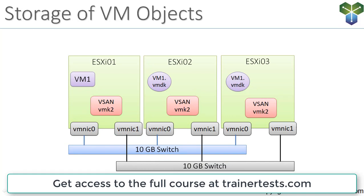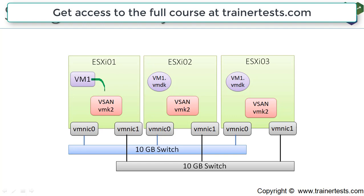So how are virtual machine objects actually stored, and how do these VM kernel ports come into the picture? Here we see VM1, one of my virtual machines stored on vSAN. As VM1 has reads or writes that need to be executed, they are going to be pushed over the physical network using this vSAN VM kernel port to the appropriate destination host. Here we can see the active VMDK for this particular virtual machine, and there's also going to be another copy of the VMDK — a mirror copy — just in case the primary copy is on a host that fails.